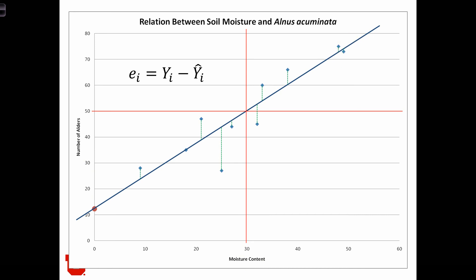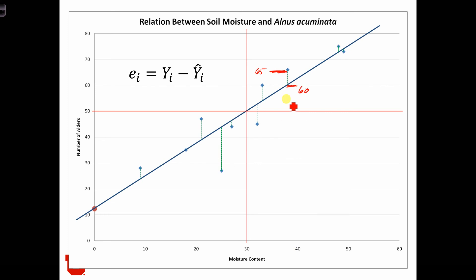For each location — let's start with this location over here — we can compute the residual or the error of our estimate at that location as the difference between yi and y-hat. Here, yi is the number of alders we observe at this location, perhaps 65. And y-hat is the number of alders that we predict at that location using the equation of the line, say 60 alders. In that case, the residual or the error for that sample point is yi minus y-hat, which is 65 minus 60, which equals 5.